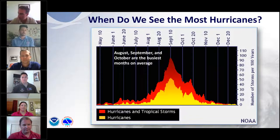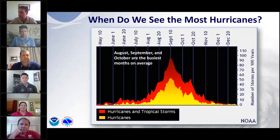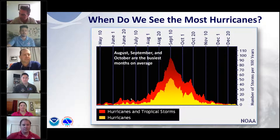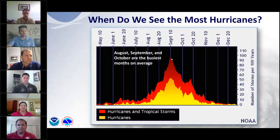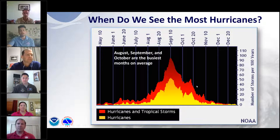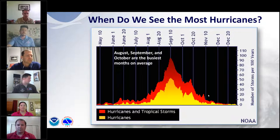Looking at the season as a whole, this diagram — which looks almost like a campfire flame — shows that activity ramps up from May into June, peaks dramatically around September 10th, which we call the peak of hurricane season. That's when the Atlantic basin sees the most hurricanes and the U.S. coast must be most on guard. Activity then tapers through October, and by November 30th hurricane season is officially over, though occasionally storms occur after December 1st.